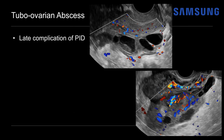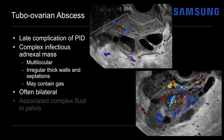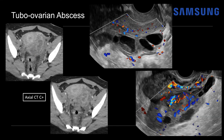A tubo-ovarian abscess is a later complication of pelvic inflammatory disease, appearing as a complex infectious adnexal mass, usually multilocular with irregular thick walls and septations. It may contain gas, appearing as bright echogenic areas with dirty shadowing or ring-down artifact — often better seen on CT. Untreated, it can evolve to bilateral tubo-ovarian abscesses. This patient's CT showed the inflammatory mass in the left adnexa with multilocularity and rim enhancement, complex inflammatory fluid surrounding it, fat stranding in the rectouterine space, and reactive rectal wall thickening.